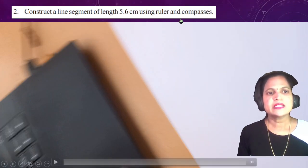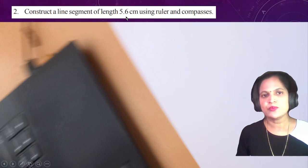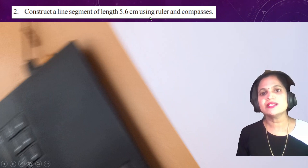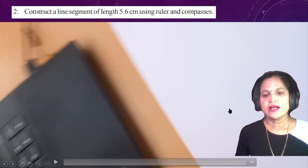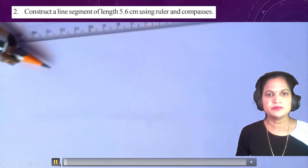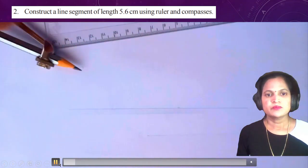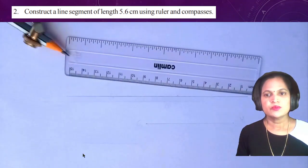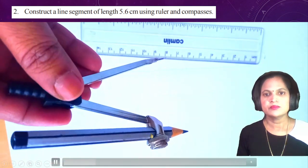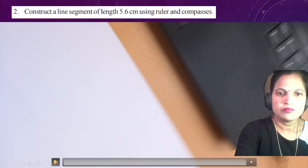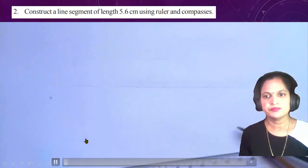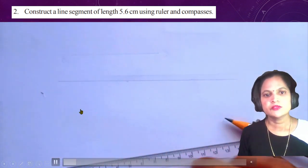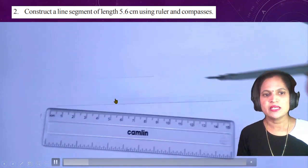Second question: construct a line segment of length 5.6 cm using ruler and compasses. We are using both instruments here. Draw a line with the help of the scale.